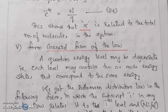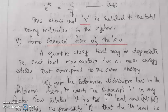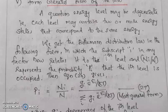Step 5: The general form of the law. A quantum energy level may be degenerate — that is, each level may contain two or more energy states corresponding to the same energy. We get the Boltzmann distribution law in the following form, in which the subscript i now relates to the i-th level, and Ni by N represents the probability pi that the i-th level is occupied. Equation 24 gives: pi equals Ni by N equals gi times e raised to minus epsilon i by kT, divided by sigma i gi e raised to minus epsilon i by kT.